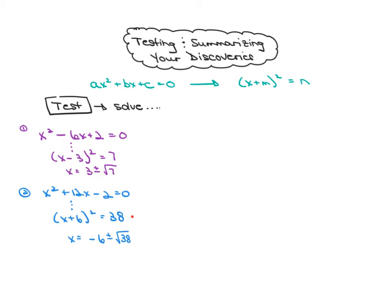For the second example hopefully you're able to use your discovery to convert it into this quadratic x plus 6 squared is equal to 38 which again you can use the square root method. If you did not get these you might want to pause keep working on them or go back to the first video and watch some of the hints because what we're going to do next is we're going to just summarize and generalize this technique.